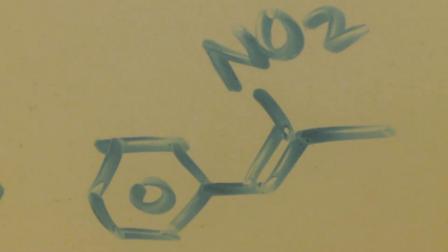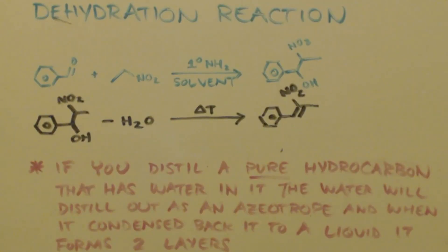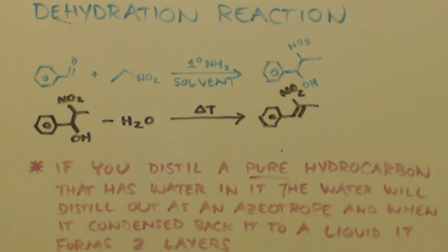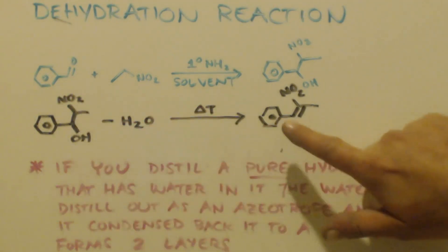Making P2NP is illegal, so if you do it you do it at your own risk. This is John Black and this is part two. I did say this is a dehydration reaction.